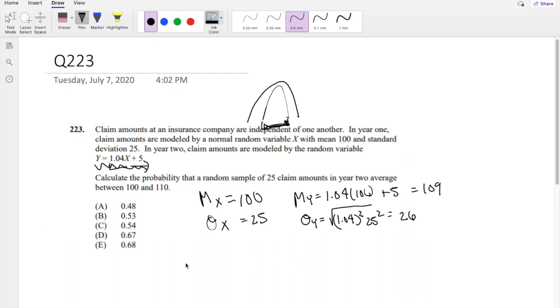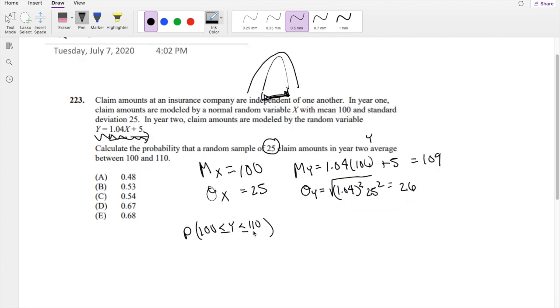And then the final question is asking, what is the probability that a random sample of 25 claims in year 2, which is our Y variable, is between 100 and 110? That's basically what it's asking for. So we have to find the mean and standard deviation in terms of 25 claims. So mean of 25 claims, they ask for the average.